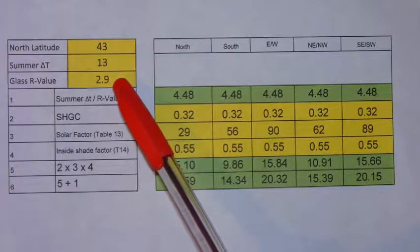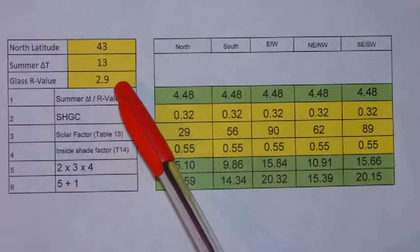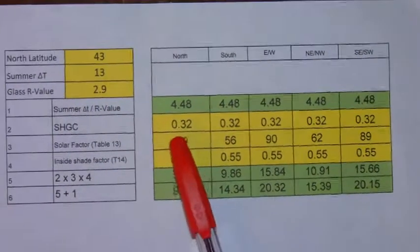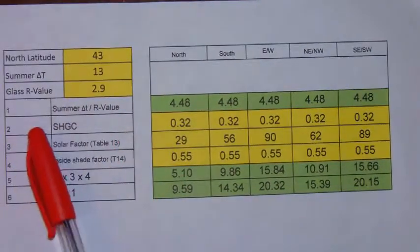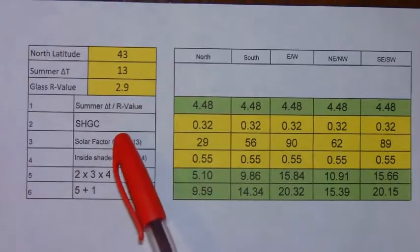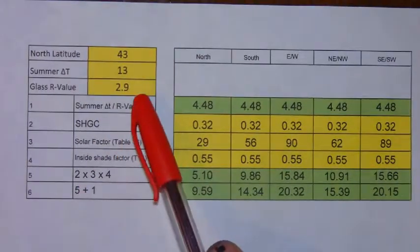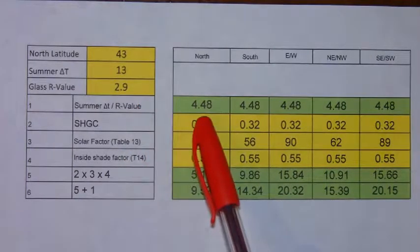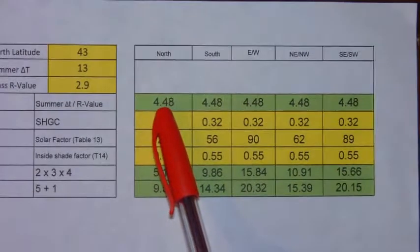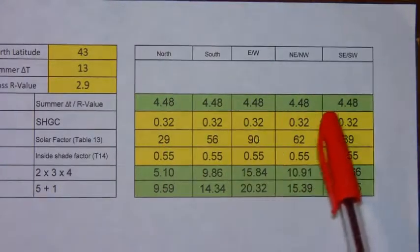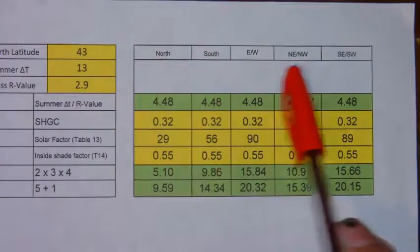The glass R value can be obtained from page 3. The first step is to take the summer delta T — in this case 13 — divided by the glass R value which is 2.9, and that gives us a factor of 4.48 for all the different directions.